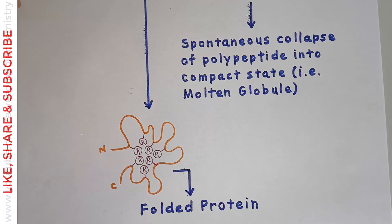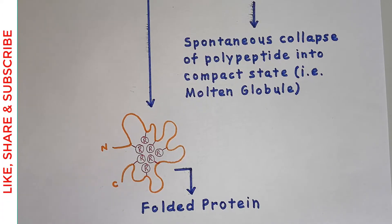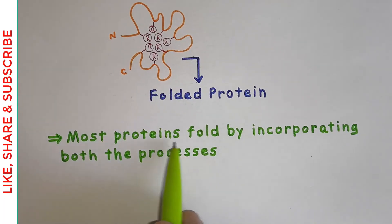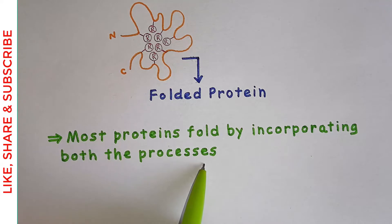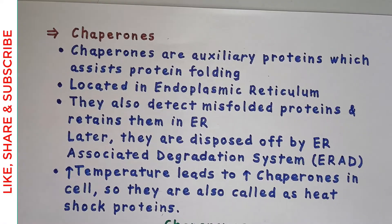We now have two different models: the hierarchical model and the molten globule model. The question arises: which model do proteins actually use? It is found that most proteins fold by incorporating both processes. Now coming to the next topic — chaperones.